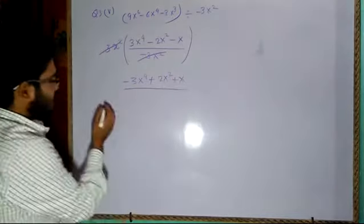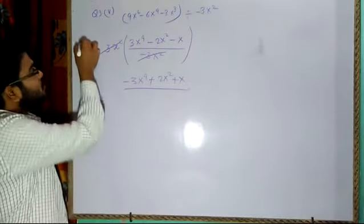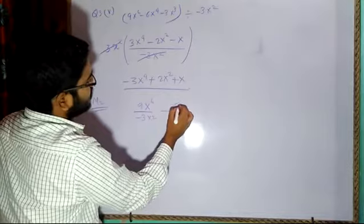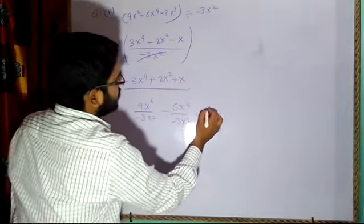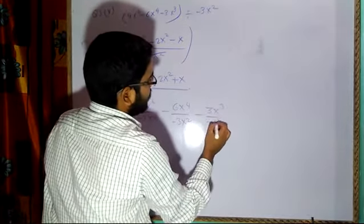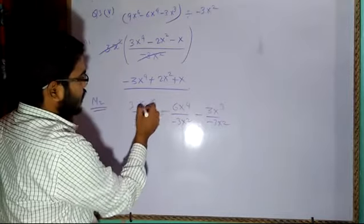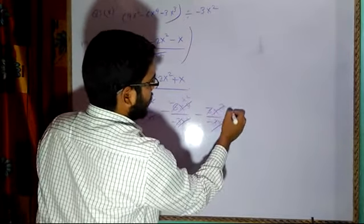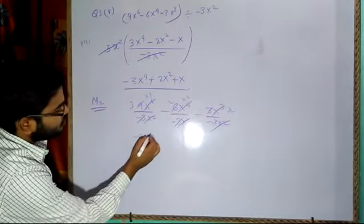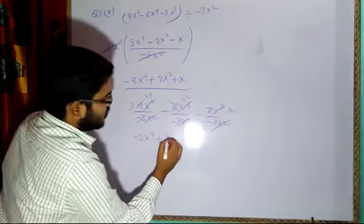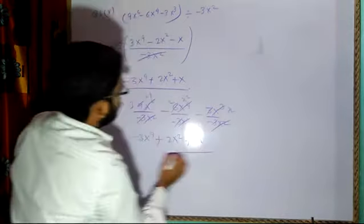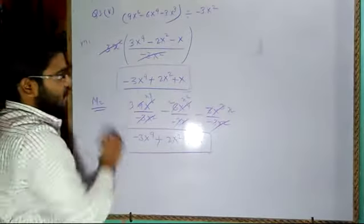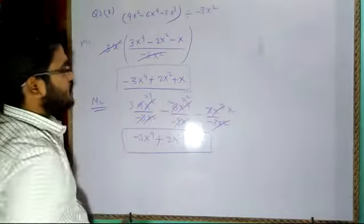For method 2, separate the terms: 9x⁶ by minus 3x² gives minus 3x⁴; minus 6x⁴ by minus 3x² gives plus 2x² (minus into minus is positive); minus 3x³ by minus 3x² gives plus x. So the final answer is minus 3x⁴ plus 2x² plus x. Whichever method you prefer — taking out common factors or separating the terms — you can use either.